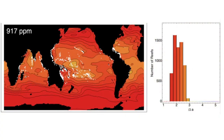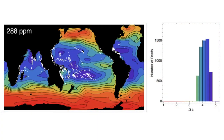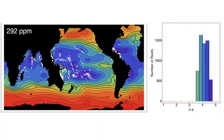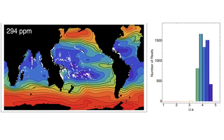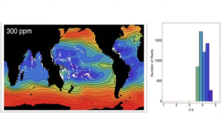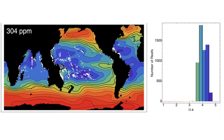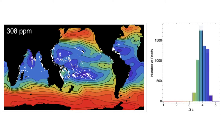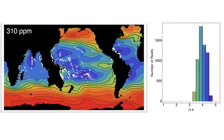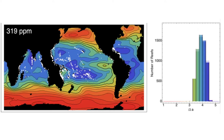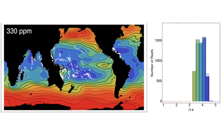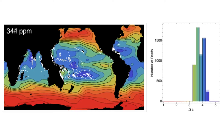So as atmospheric carbon dioxide rises, the ocean is becoming less saturated with aragonite, and the histograms at right show aragonite saturation at each of the coral reefs marked in white on the map.